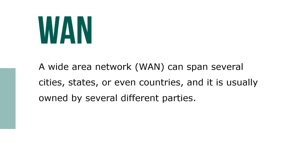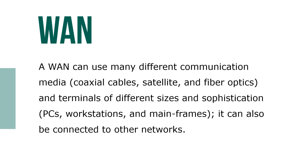A wide area network, or WAN, can span several cities, states, or even countries, and is usually owned by several different parties. A WAN may use many different communication media like coaxial cable, satellite, and fiber optics, and terminals of different sizes and sophistications — PCs, workstations, and mainframes. It also can be connected to other networks.